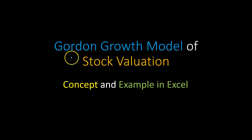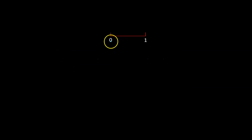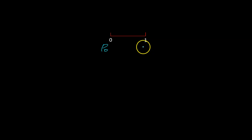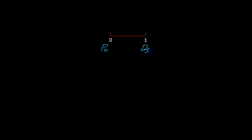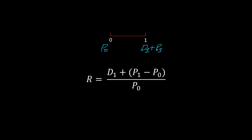Before we continue, I want to tell you about something that is related, though you won't see it immediately. If you buy a stock at time period zero for a price P0, and you hold that investment for one year, someone asks you what is the total return you made. You'll say: I got two things — a dividend D1 at the end of year one, and I was able to sell the stock for a price P1.